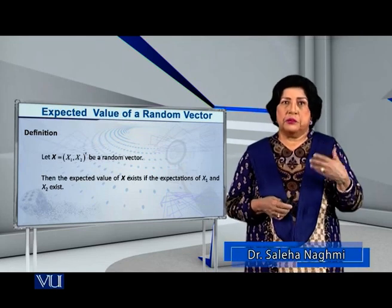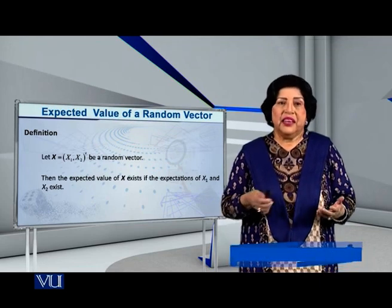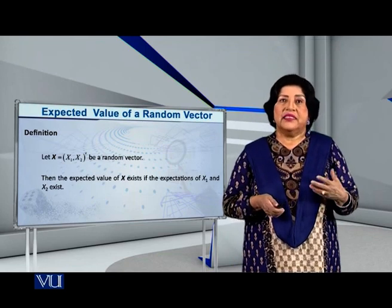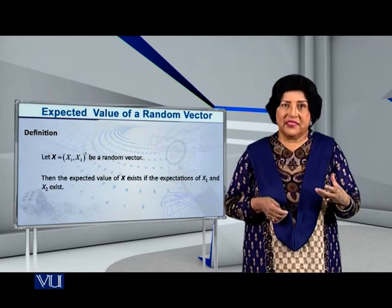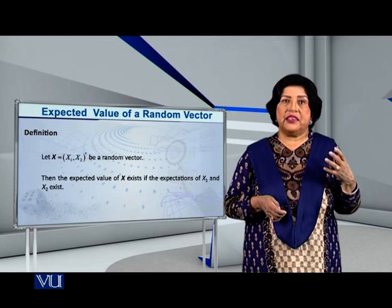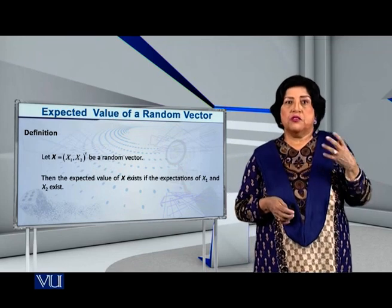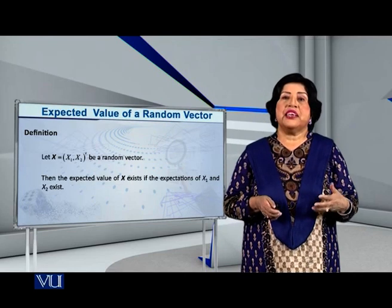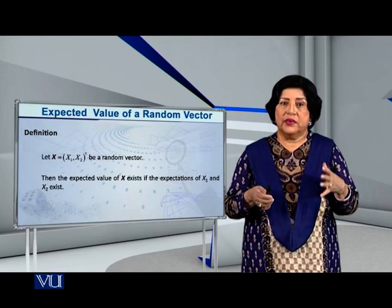So I start again. Let capital X, bold, be a random vector given by two random variables, x1 and x2. Then, the expected value of the vector X will exist if the expectations of x1 and x2 exist. If their expectations exist separately, then we say that the expected value of that vector also exists.